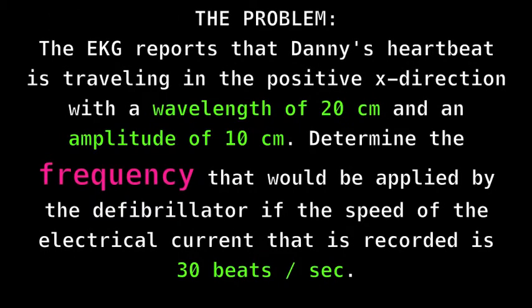Danny's heart condition has caused his heart to stop beating. We can help revive him by solving the following problem. Let's do it! So, what's the problem? The EKG reports that Danny's heartbeat is traveling in the positive x direction with a wavelength of 20 centimeters and an amplitude of 10 centimeters. Determine the frequency that would be applied by the defibrillator if the speed of the electrical current that is recorded is 30 beats per second.